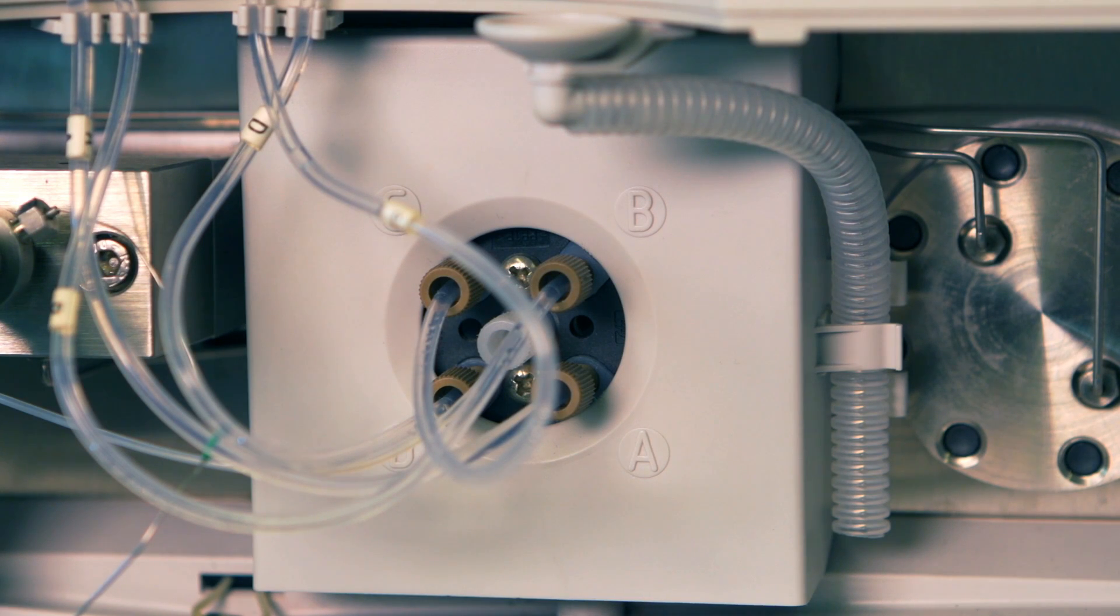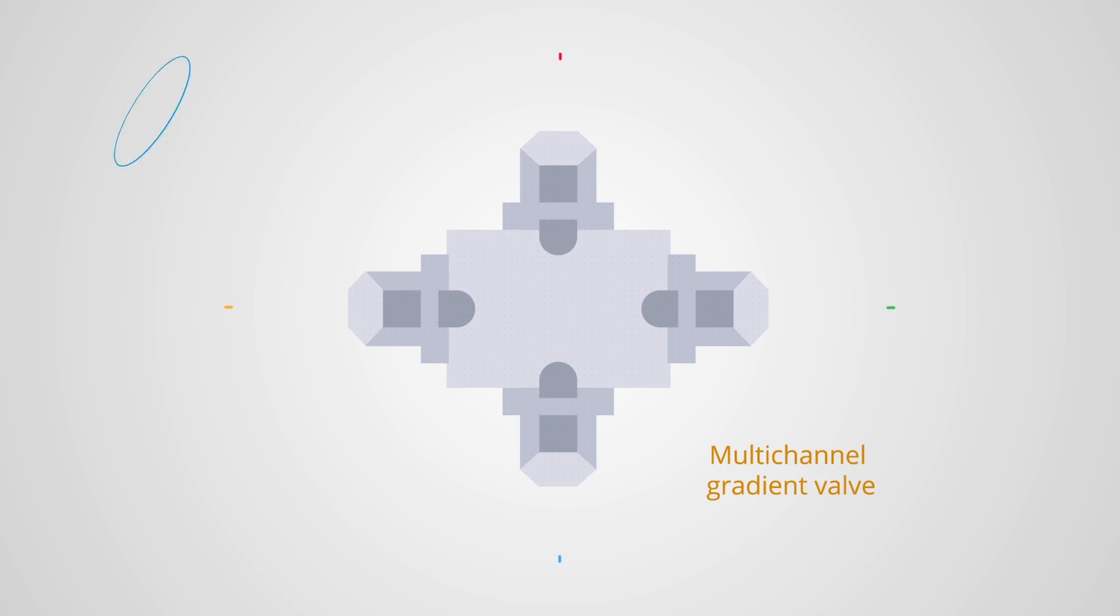A gradient valve lets the user control the proportion of each solvent contributing to the mobile phase. The valve also thoroughly mixes the solvents together.